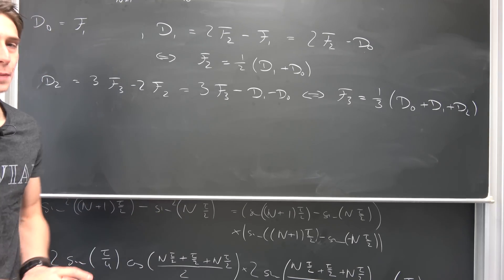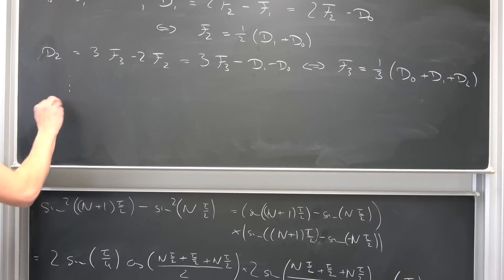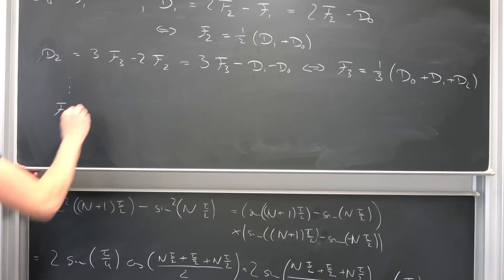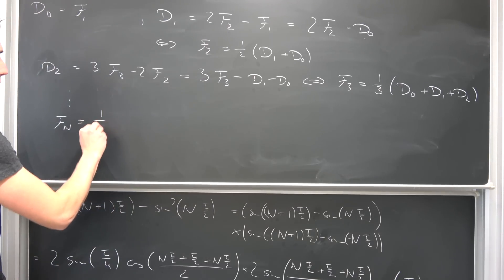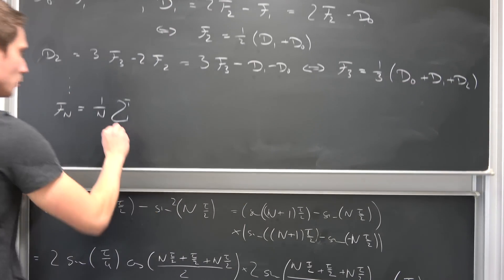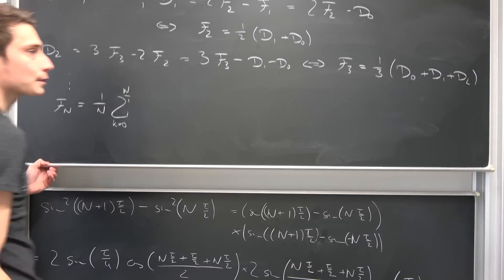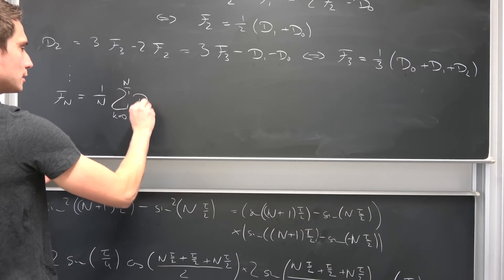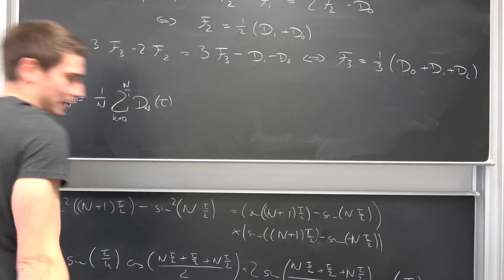I hope you can see the pattern. So if we move on up until the nth term, the Fejer of degree n is going to be 1 over n times the sum running from k being equal to 0 to capital N of D_k of tau, in this case if we do it with respect to tau.